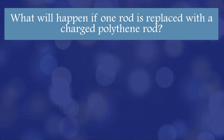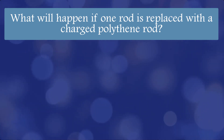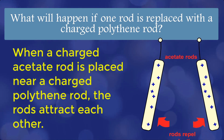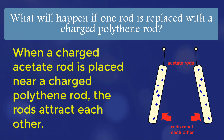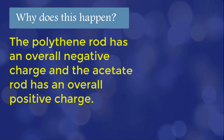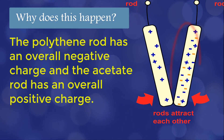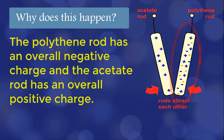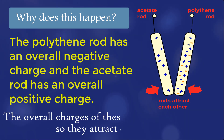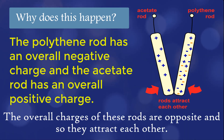What will happen if one rod is replaced with a charged polythene rod? When a charged acetate rod is placed near a charged polythene rod, the rods attract each other. This happens because the polythene rod has an overall negative charge and the acetate rod has an overall positive charge — their charges are opposite, so they attract each other.